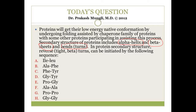Option A is isoleucine and leucine. Coming straight to the point, whenever you identify the amino acid responsible for beta bends, loops, turns, and coils, it is always because of proline.